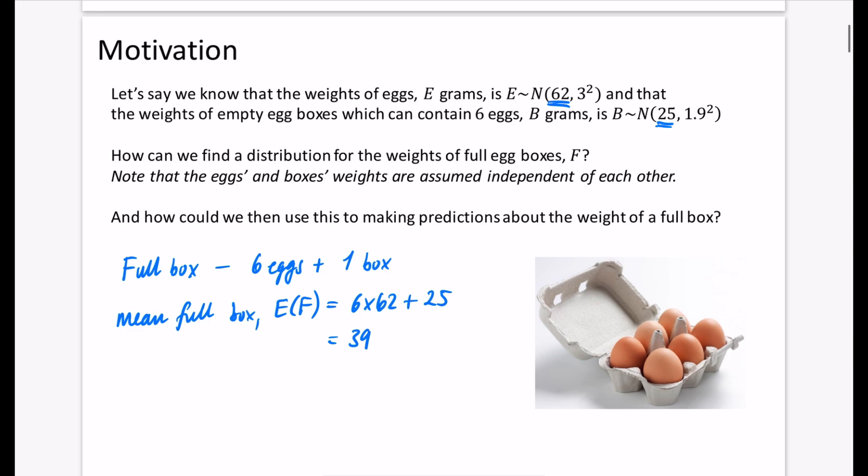I'm imagining that the box is going to be 397 grams as the mean. But the thing that we're going to try and work on is either the variance or the standard deviation of this box that we've got here. And you might like to, at the end of this chapter, come back and see if you can work out what the variance should be for this.